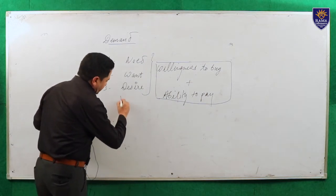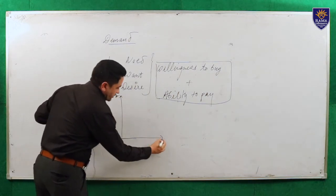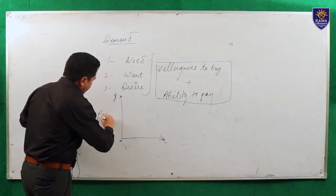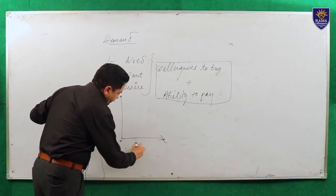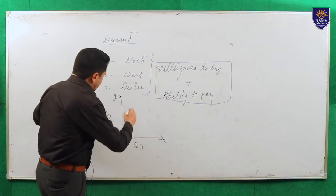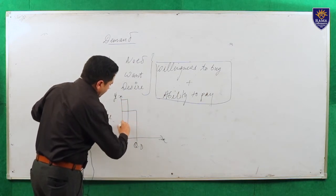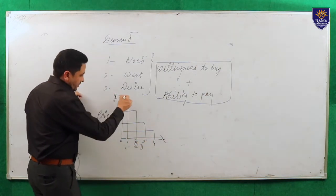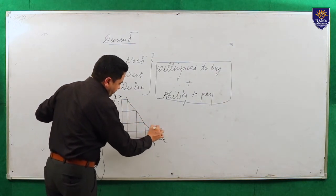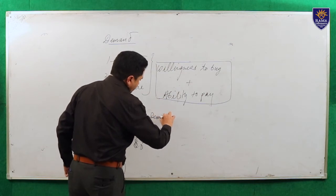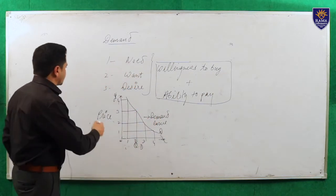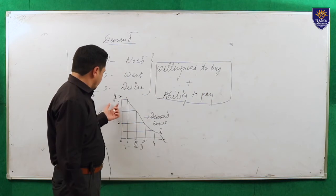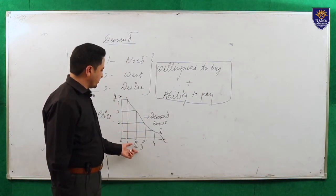We can understand demand with the help of a curve. This is the x-axis, this is the y-axis. In the y-axis we show the price of the commodity. In the x-axis we show the quantity of demand — Qd is the quantity of demand. So price values go 1, 2, 3, 4 on the y-axis, and quantity demanded goes 1, 2, 3, 4 on the x-axis. And here it comes — the demand curve. It slopes downward. It always slopes downward. So this is the demand curve, showing price on the y-axis and Qd quantity of demand on the x-axis.